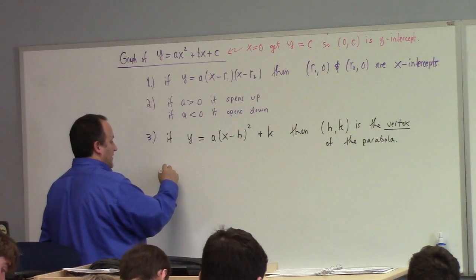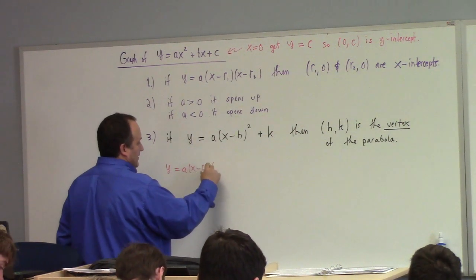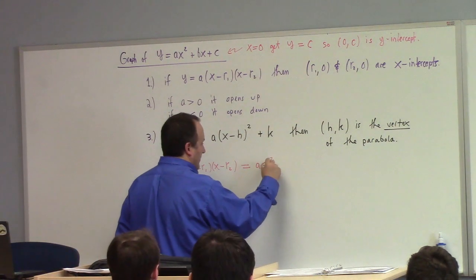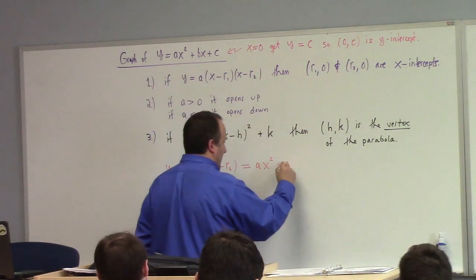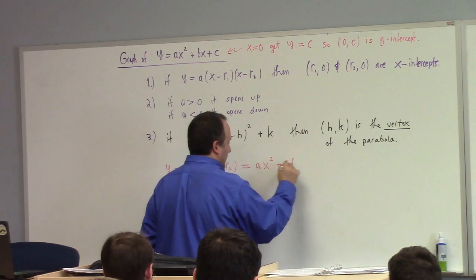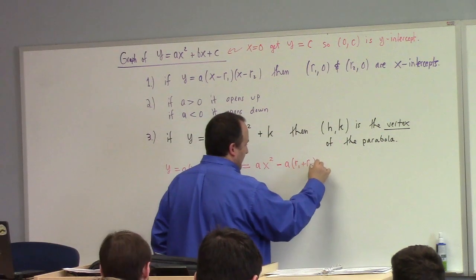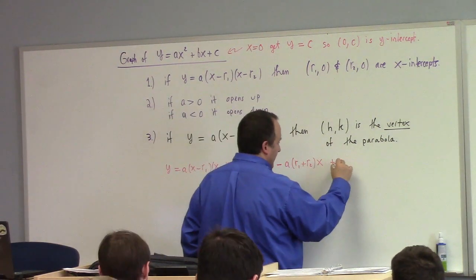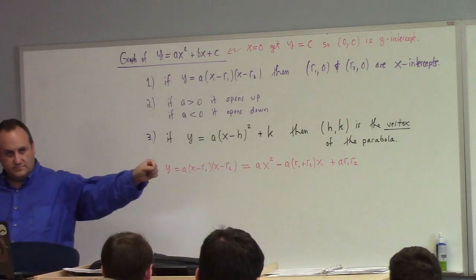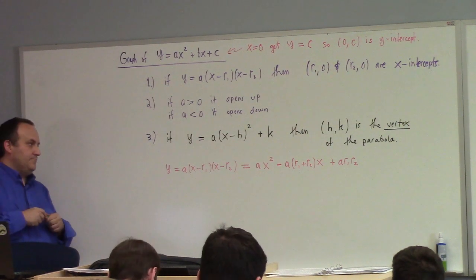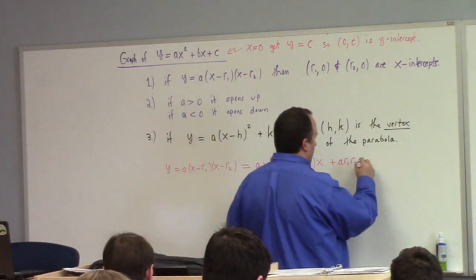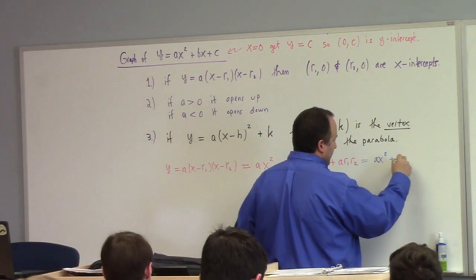So we have y is a times x minus r1 times x minus r2, right? If we multiply this out, what do we get? ax squared plus a times minus r1 plus r2 times x plus a r1 r2. So all I've done here is just foil out the formula.